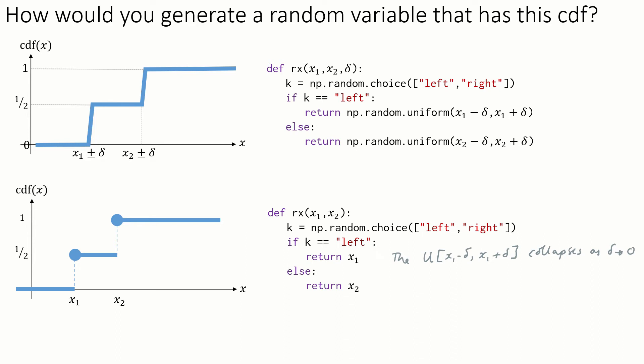Well, actually, this is a daft way to write the code. All this code does is return x1 with probability 1 half, return x2 with probability 1 half, and we can write it much more simply. np.random.choice of x1, x2. This returns just one of them, chosen at random, each equally likely.